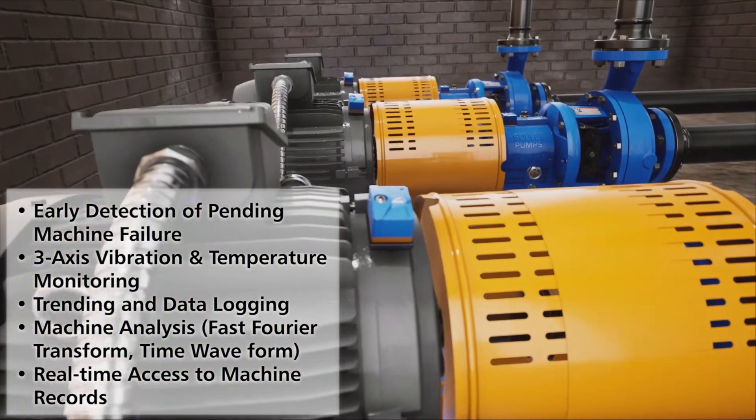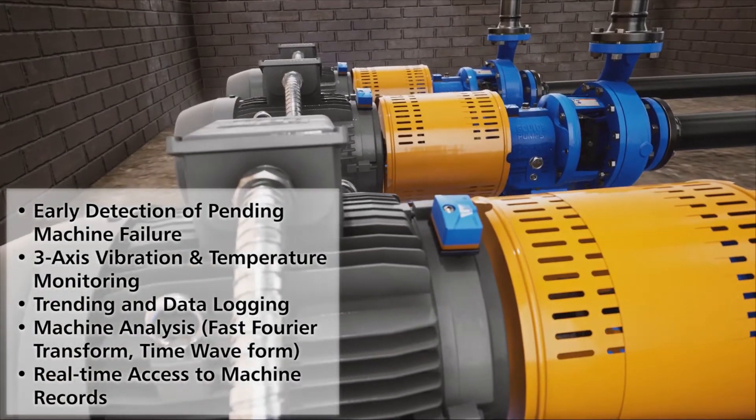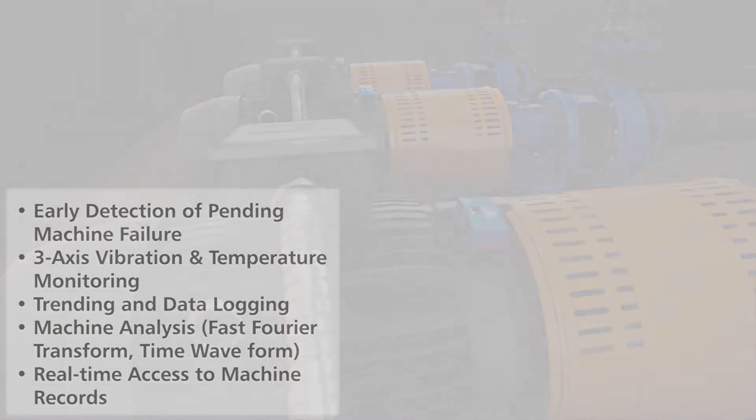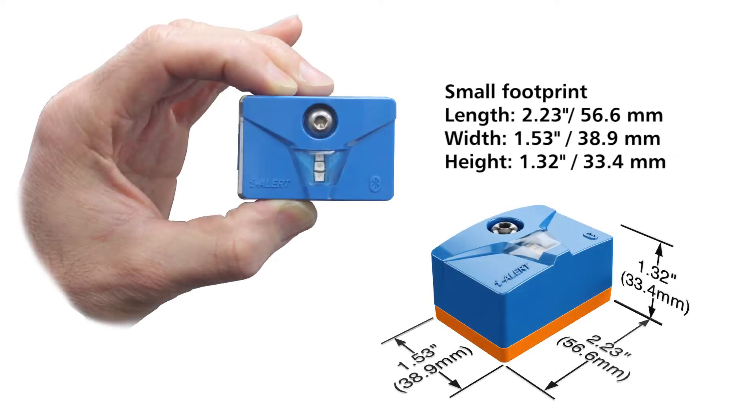It tracks vibration, temperature, and runtime hours, and wirelessly syncs the data with a smartphone. The EyeAlert 2 device is the first condition monitor to successfully integrate these technologies into an industrial package, all within a small footprint.